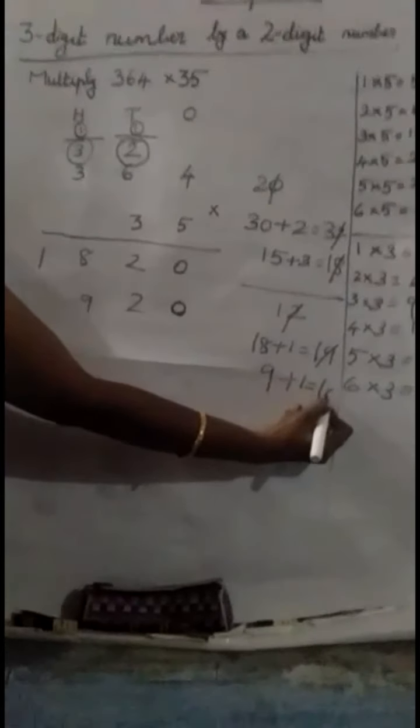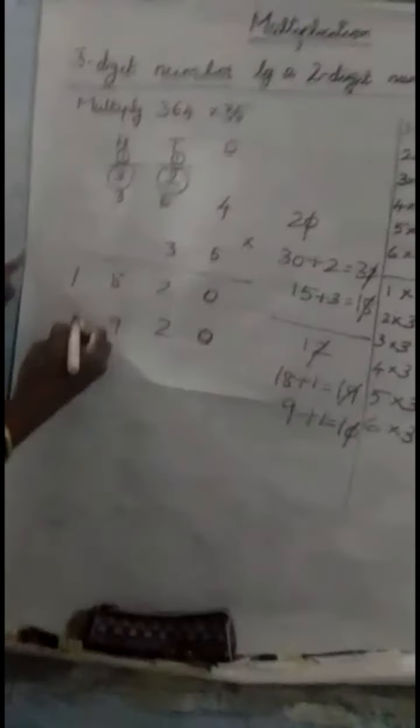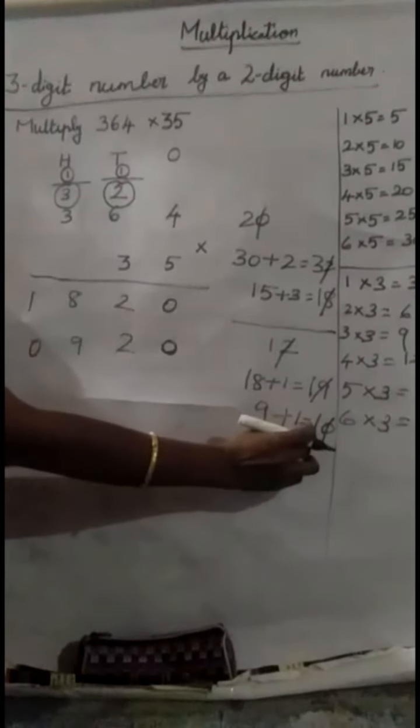Now, 3, 3s are 9. What's a reminder? Again, 1. 9 plus 1 equal to 10. 0 here. Leave some gap. Again, I am telling. Last number. You have to leave some gap and write.